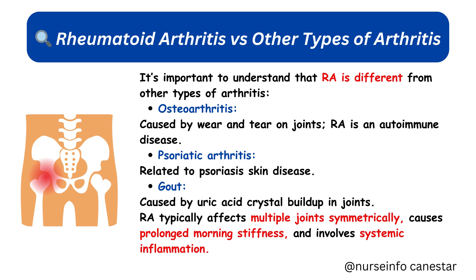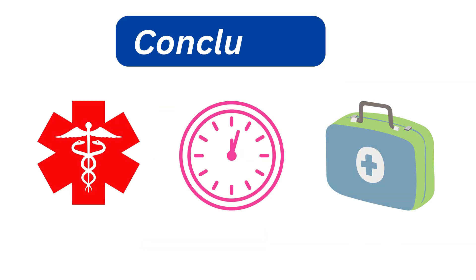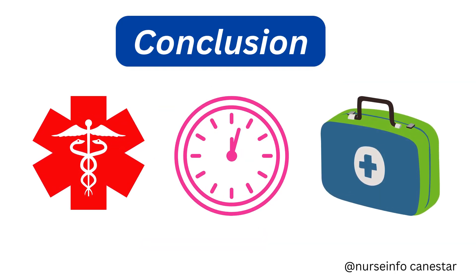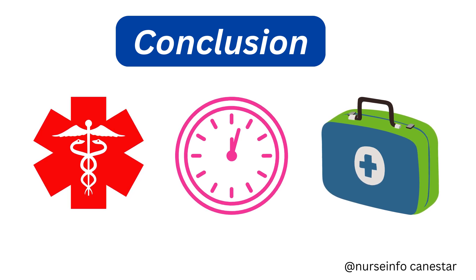RA typically affects multiple joints symmetrically, causes prolonged morning stiffness, and involves systemic inflammation. Conclusion: Rheumatoid arthritis is a serious condition, but with early diagnosis, modern treatments, and healthy lifestyle choices, people with RA can lead full and active lives. If you or someone you know experiences persistent joint pain and stiffness, especially in the mornings, don't ignore it — seek medical advice early.